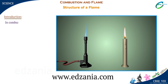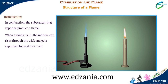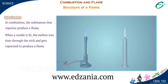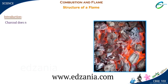In combustion, the substances that vaporise produce a flame. When a candle is lit, the molten wax rises through the wick and gets vaporised to produce a flame. A fuel like charcoal does not vaporise and so does not produce a flame.